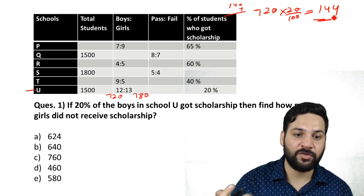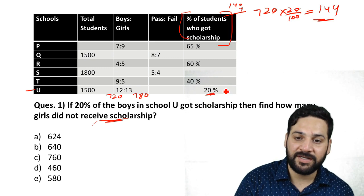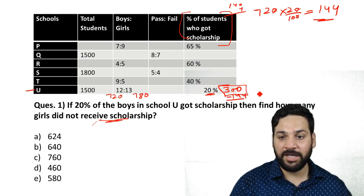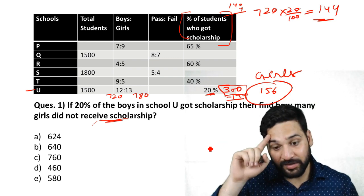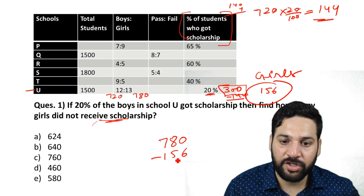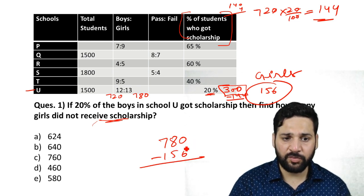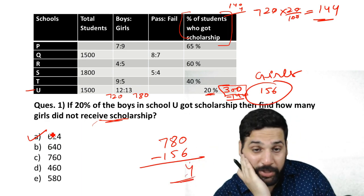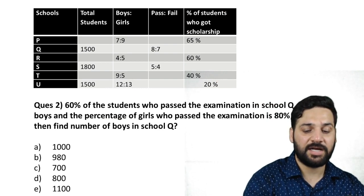The total number of students who got the scholarship is 20 percent of 1500, which is 300. Out of 300, 144 are boys, so 156 girls got the scholarship. The total number of girls is 780, and 156 got the scholarship, so the number of girls who did NOT get the scholarship is 780 − 156 = 624. That's the correct answer — really simple.